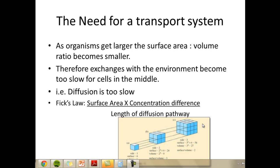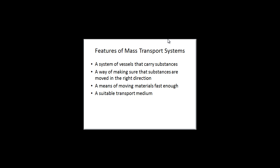So, therefore, there's a need for a mass transport system to carry substances around the organism. So, some features of some common mass transport systems. You need a system of vessels that carry substances around the organism. You need a way of making sure that those substances are moved in the right direction. You need a means of moving the materials fast enough. And you also need a suitable transport medium. So in humans, the mass transport system is the circulatory system. And the specialised exchange organs include things like the lungs and the digestive system as well.